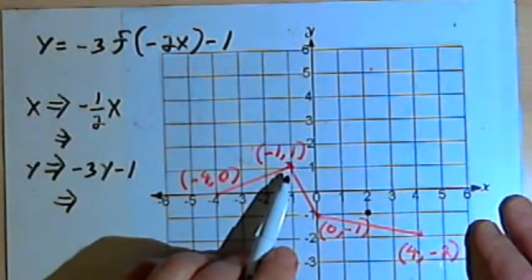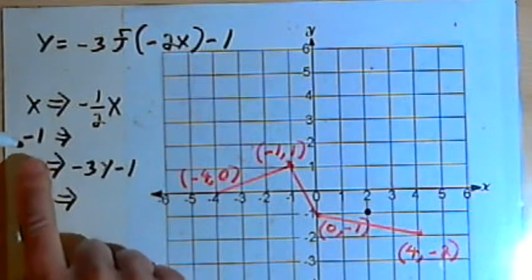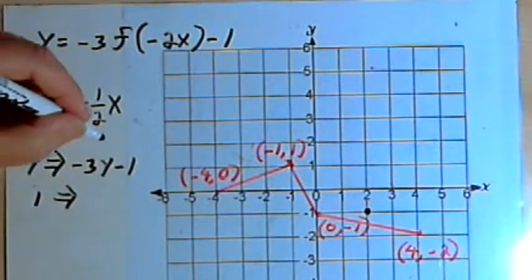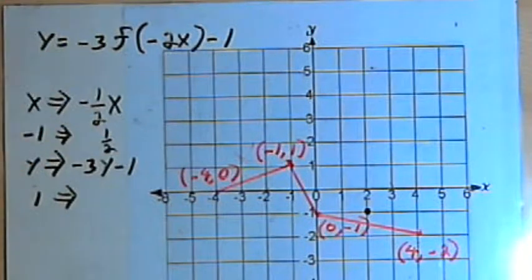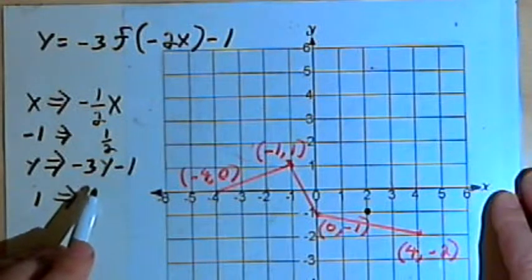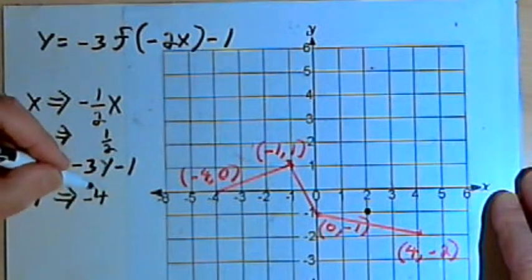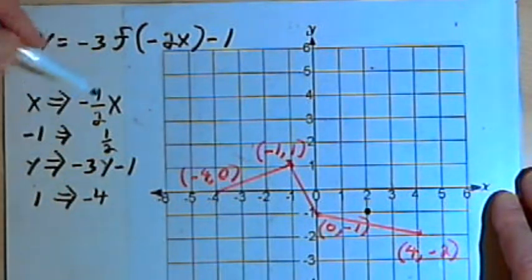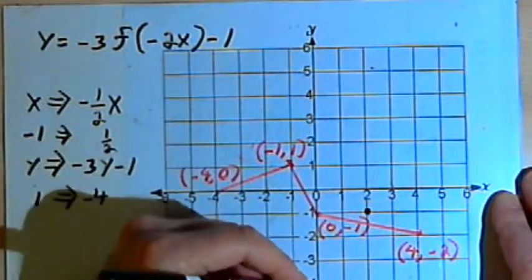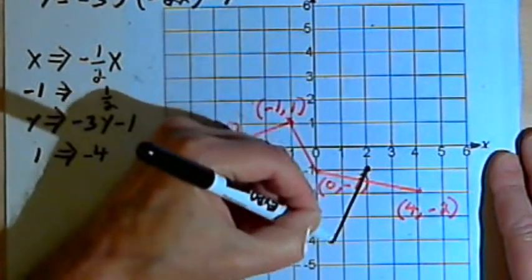My next point is at negative 1, 1. I want to take the x-coordinate, negative 1, and multiply it by negative one half — that's going to become positive one half. I want to take the y-coordinate, which is 1, and multiply it by negative 3, so that's going to be negative 3, minus 1 is negative 4. So I should have a point at one half, negative 4. One half is about here and negative 4 would be here. I'll connect those two dots.